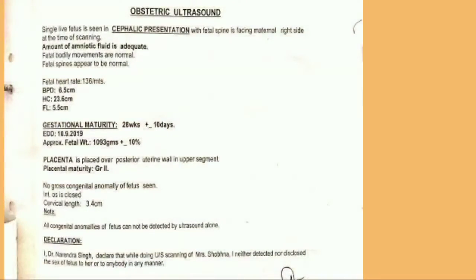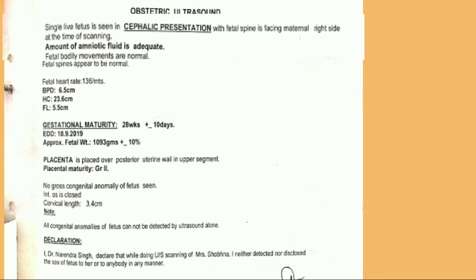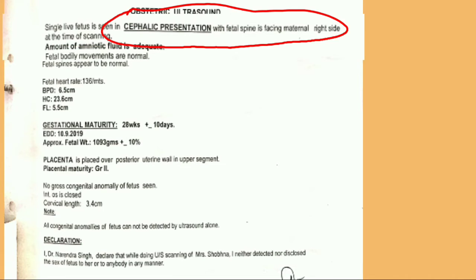Here I am taking my ultrasound of 28 weeks as an example to explain. In the first line it is written that a single live fetus is seen — this means there is a single baby in the pregnancy, no twins or more babies. The next line says cephalic presentation with fetal spine facing the maternal right side at the time of scanning.